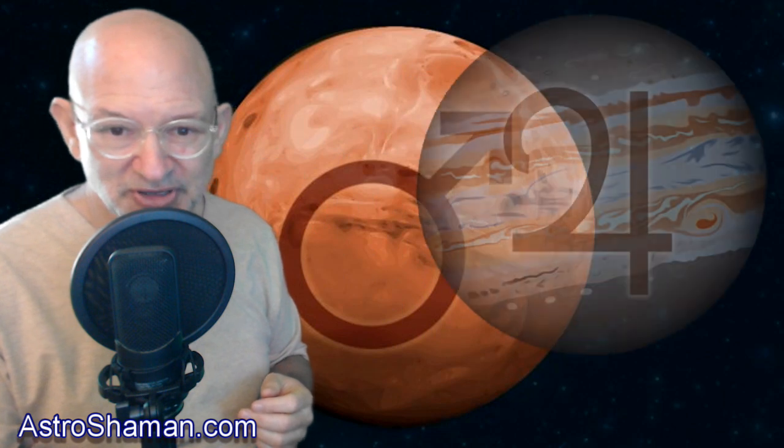But our major event on this day is Jupiter turning direct. And this happens at 8:41 p.m. Eastern Daylight Time. That'll happen at 17 degrees, 24 minutes Capricorn. Now Jupiter has been retrograde for four months ever since May 14. He turned retrograde back at 27 degrees Capricorn. So he's backed up about 10 degrees while he's been retrograding.